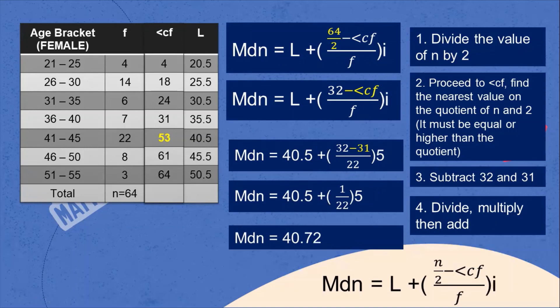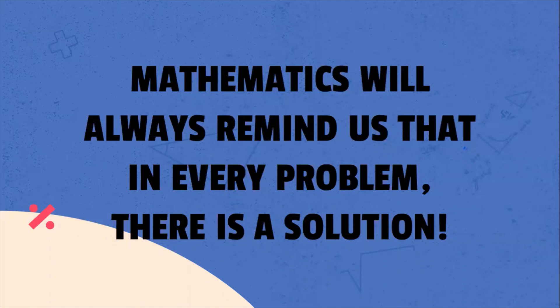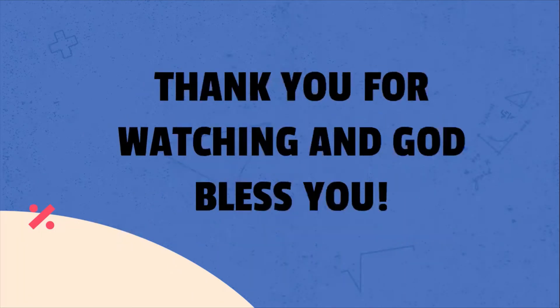The middlemost score of the male respondents is 40.72. That is our lesson for today — median grouped data. Mathematics will always remind us that in every problem, there is a solution. Thank you for watching. Please subscribe and share this video if you learned something. God bless you all.